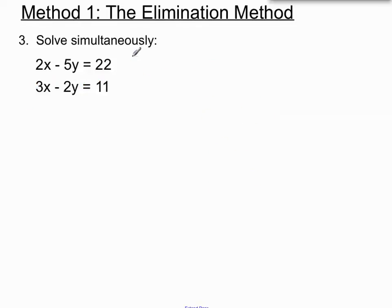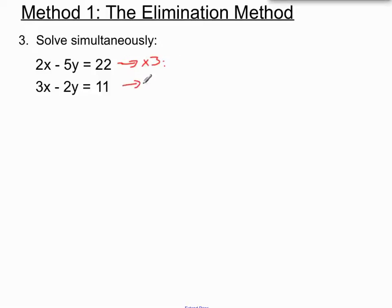Now let's have a look at the really hard ones. You'll notice that in this third set of equations, we have 2x and 3x, and we have minus 5y and minus 2y — none of those match up very well at all. So what we're going to do is adjust both of them. We're going to make a new equation by multiplying by 3 on every term of the first equation, and multiply the second equation by 2 for every term.